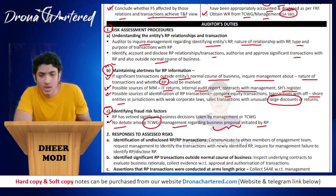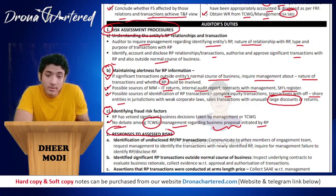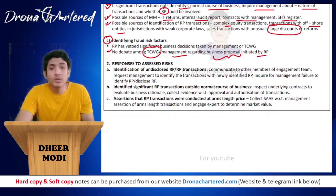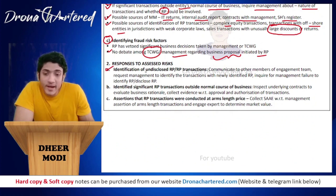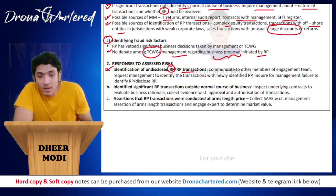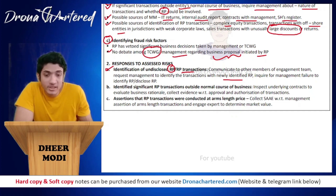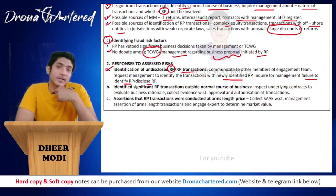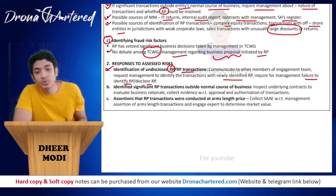Our next point is responses to assessed risk. Once you have identified the risk, you must respond appropriately. First, for identification of undisclosed related parties or undisclosed related party transactions: communicate to other members of the engagement team, request management to identify transactions with the newly identified related parties, and inquire management about the failure to disclose — asking why this related party or transaction was not disclosed.